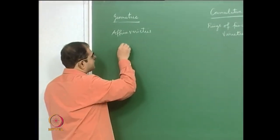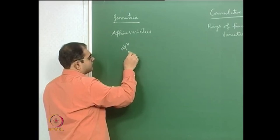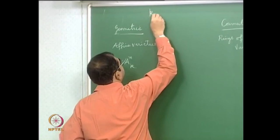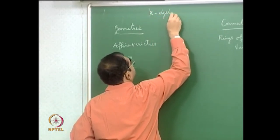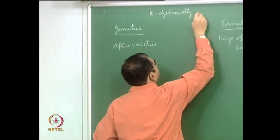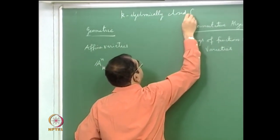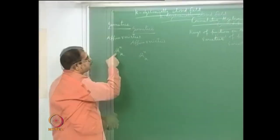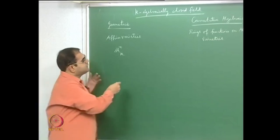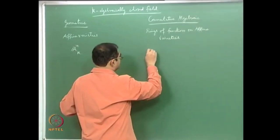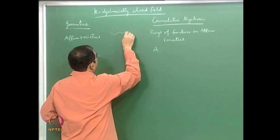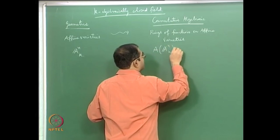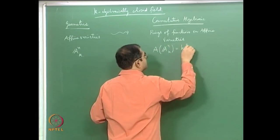Standard examples: affine space itself is irreducible. We are always working with k an algebraically closed field. If you take affine n-space, the ring of functions A(A^n_k) is just the polynomial ring in n variables over k.